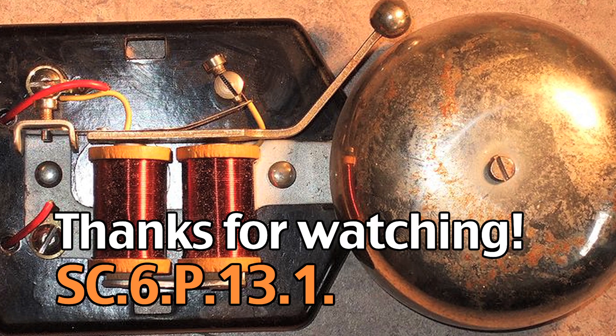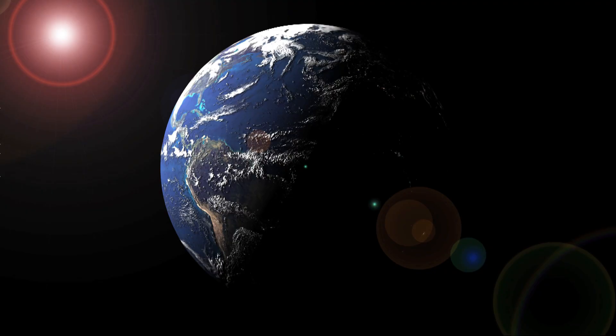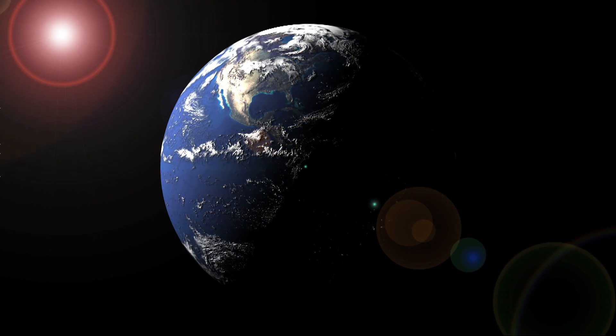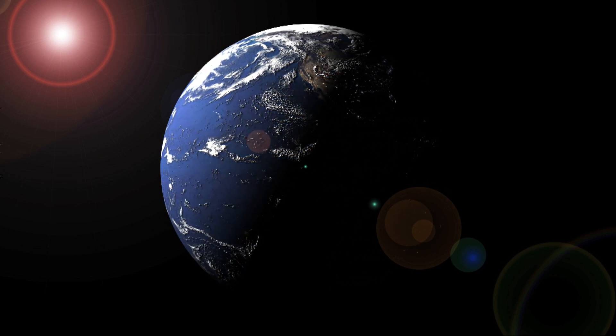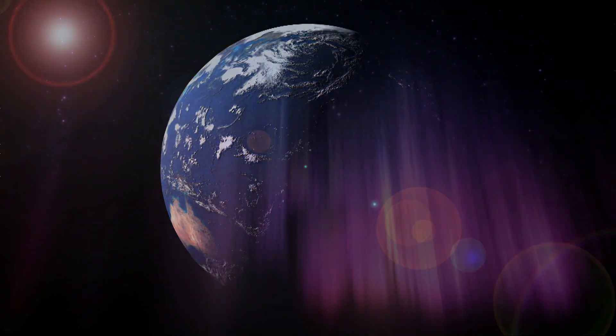Thanks for watching. Before you go, think about this: the Earth is one big electromagnet. Earth's iron core creates a magnetic field around Earth, and when the sun's radiation hits that field, auroras can be formed.